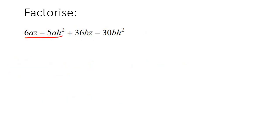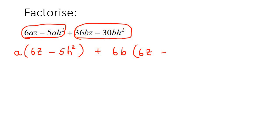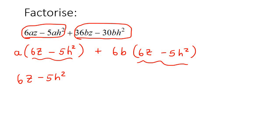So here with this one, I'm going to take the first part together and then the second part together. The only common factor in the first part is a, so we take out an a, and you're left with 6z take away 5h². Then in the next part there's a common factor of 6 and b, so you take out 6b, and you'd be left with 6z take away 5h². Those are the same, so then in the next step you take them out as a common factor, and you're left with a plus 6b.